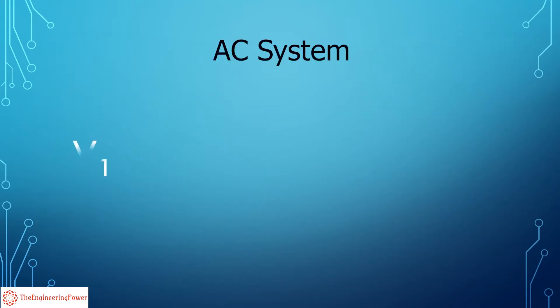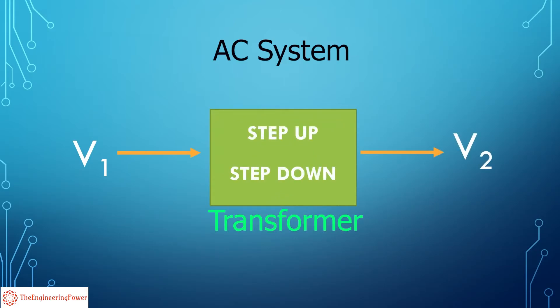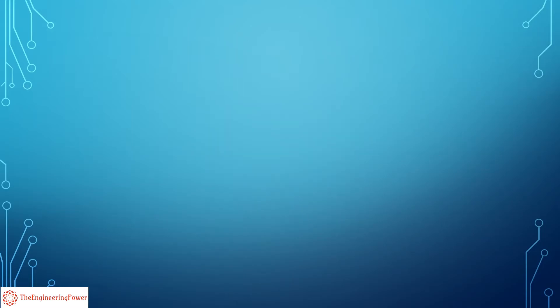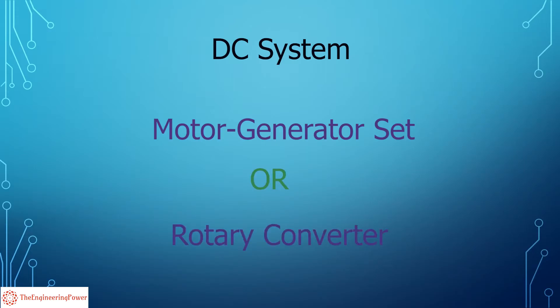Distribution system. On distribution side in AC system, the voltage can be easily stepped up or stepped down with the help of transformer which have high efficiency. However, in DC system, the only way to step down the voltage for distribution is through a motor generator set or a rotary converter, which is an inefficient process.